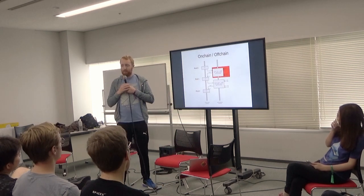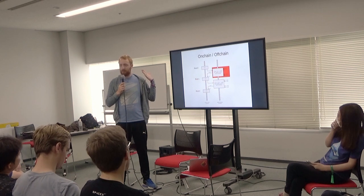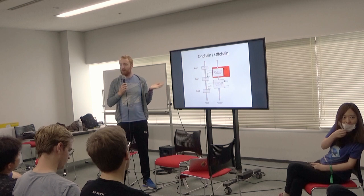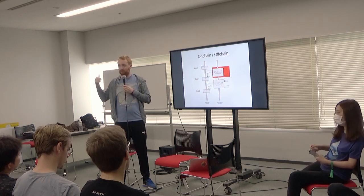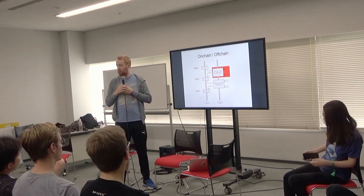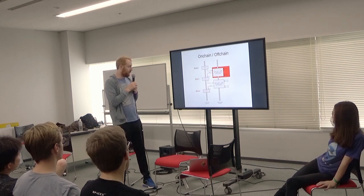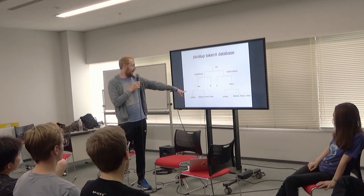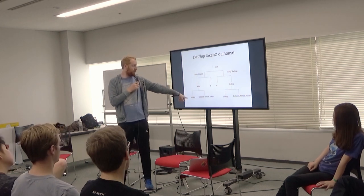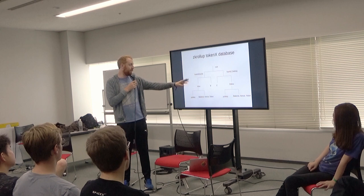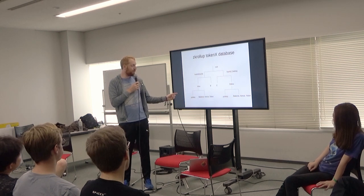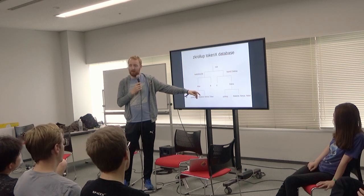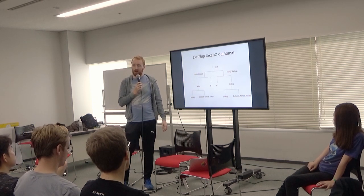There's this data availability problem — if someone updates the Merkle root, you're not able to update the system. Because we want multiple people to be able to do state transitions, what we do is we also reveal a diff. The diff is basically, if Alice sends a token to Deborah, the diff is the from address, the to address, and the amount.